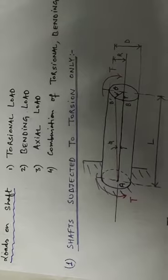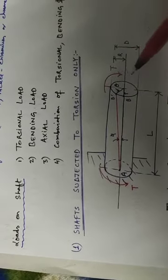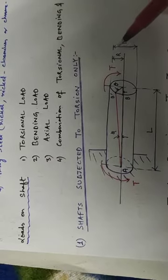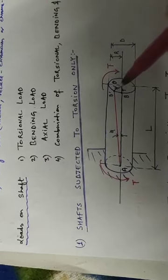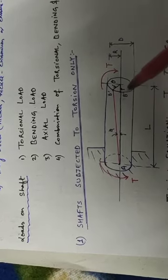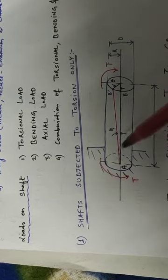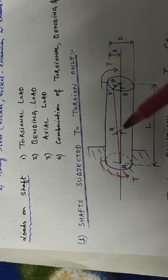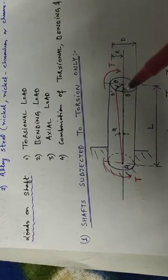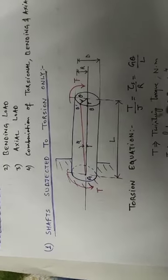We will first design the shaft on the basis of torsion only. When a torque T is applied to the shaft, theta is the angle of twist, AB is a fiber which, due to this torque, distorts to AB'. Phi is the shear strain, L is the length of the shaft, and R is the radius. We will calculate the value of diameter D using the torsion equation.